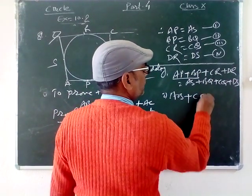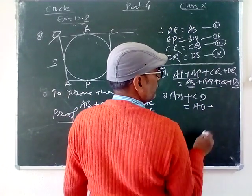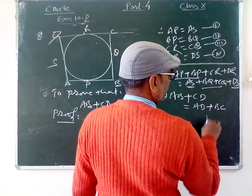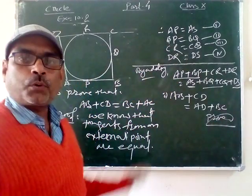AP plus BP plus CR plus DR equals AS plus BQ plus CQ plus DS. This gives AB plus CD equals AD plus BC. Hence proved. This is the proof.